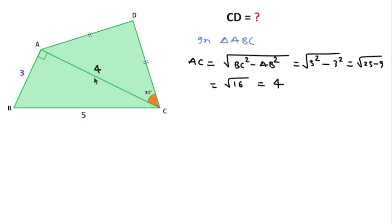If AC is 4 and CD and AD are equal, we can write AD equals CD. Let's suppose this is X.